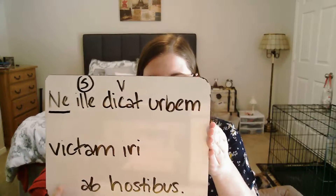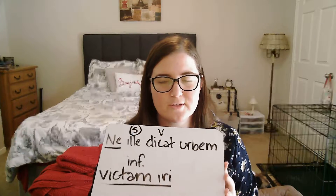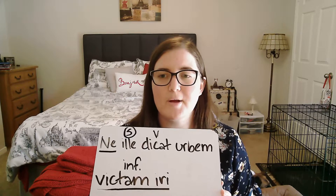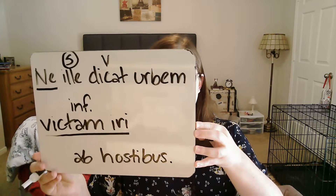Now we're going to parse everything else in our sentence. I'm looking for a subject and I find it here with 'ille', so I'm going to mark that as our subject. Now I should notice that I have 'victum iri' here, which is an infinitive. I have an infinitive and I have 'dico', which is a head verb, making this an indirect statement. 'Victum iri' is a future passive infinitive — remember, fourth principal part plus 'iri' equals a future passive infinitive. So we have an indirect statement there.